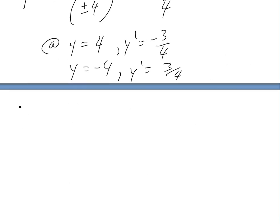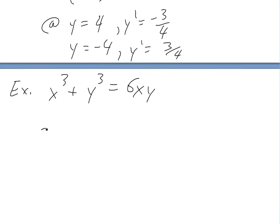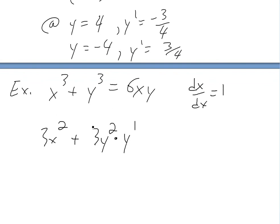The really useful thing about implicit differentiation is when you look at functions like x cubed plus y cubed equals 6x times y. This is really hard to solve for y, but to get the derivative we don't need to. We just take the derivative on both sides, getting 3x squared plus 3y squared times y prime on the left. Note that the derivative of x in terms of x is just dx/dx equals 1, so we don't need to write an x prime. On the right side, we use the product rule on 6xy: that gives 6 times y plus 6 times x times y prime, using chain rule.